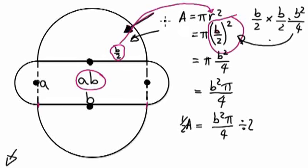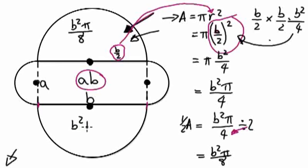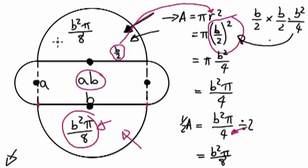Because this is only half of the circle, let's divide it by 2. This formula will tell us a whole circle, but because we only want half of the circle we have to divide it by 2. Whenever you divide a fraction by 2, it gets multiplied to the bottom. So this will be B squared pi over 8. So the area of this semicircle is B squared pi over 8. And then you've got another one over here: B squared pi over 8.